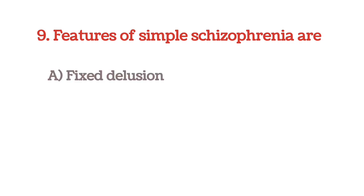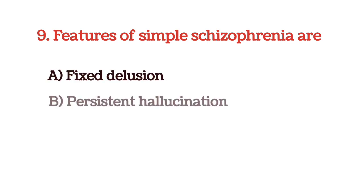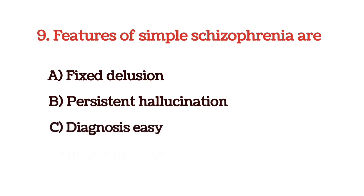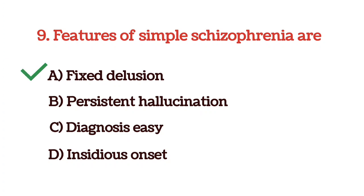Next question: features of simple schizophrenia are — options are fixed delusion, persistent hallucination, diagnosis easy, and insidious onset. The answer is option A, fixed delusion.